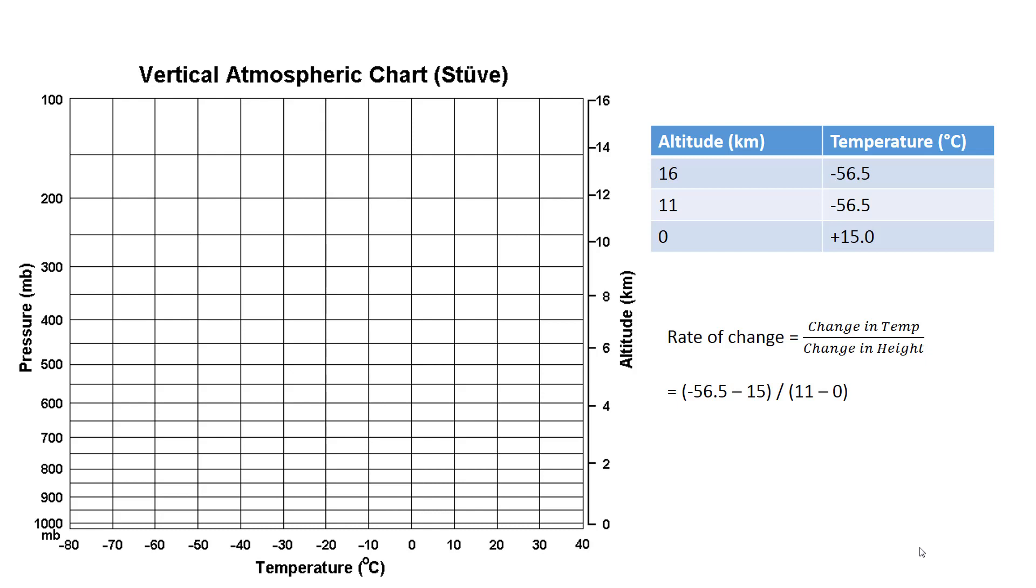Alright everybody, welcome now to Investigation 2B, which is a little different from 2A. 2A talked about everything on the surface of the Earth, but one of the things that meteorologists really care about in addition to the surface of the Earth is what's happening in the vertical of the atmosphere.